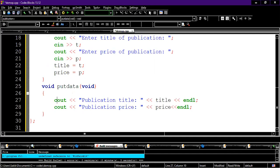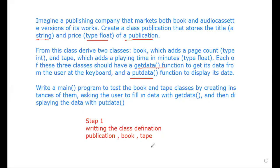Now let's go back to the problem statement. For the Book class, we derive it from Publication and add a page count, so we have one extra variable — integer pageCount. We write the getData and putData functions, and the rest of the structure will be the same.